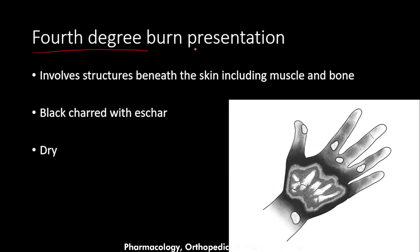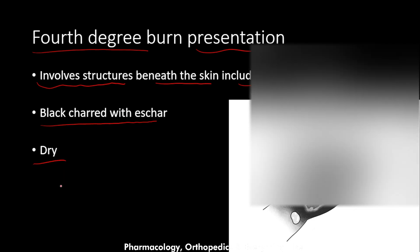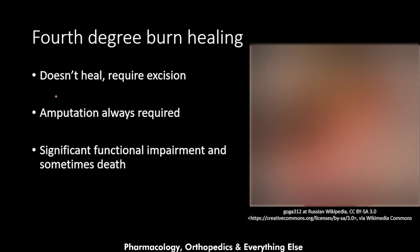The fourth degree burn involves structures beneath the skin, including the muscle and bone. It is characterized by eschar formation, which is dead tissue that is black in color. It is a dry type of burn, and the fourth degree burn does not heal on its own — it requires excision.